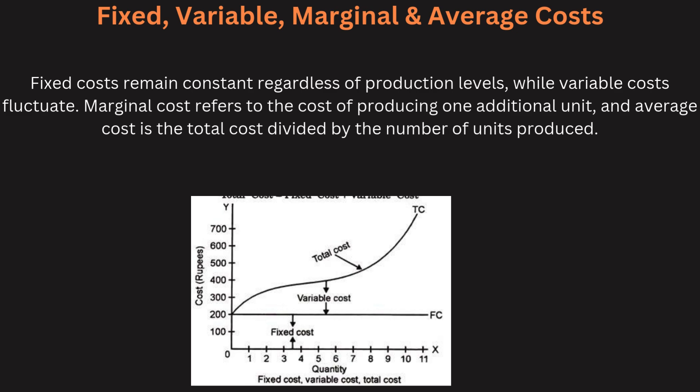First, let's cover fixed, variable, marginal, and average cost. Fixed costs are expenses that do not change with the production level, like rent and salaries. Variable costs fluctuate based on production, such as raw materials. Marginal cost refers to the additional cost incurred to produce one more unit of a product. Average cost is the total cost divided by the number of units produced.